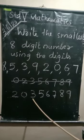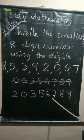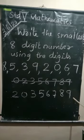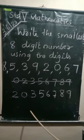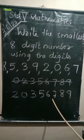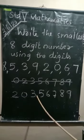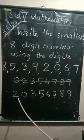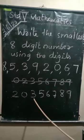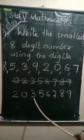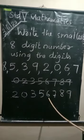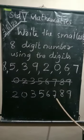Then all the other digits are in their ascending order. The number we get is 2 crore 3 lakh 56,789.